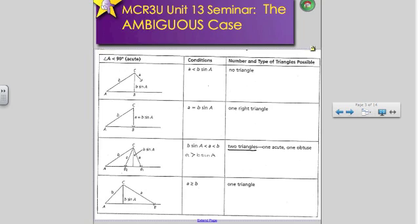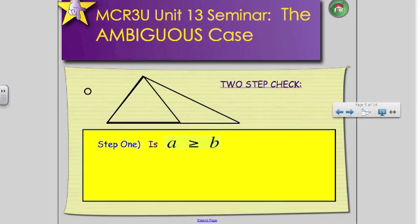First of all, a triangle cannot be, might not be possible. So, your very first step, you are given your side length A and your side length B. So, step one, I want you to write this down, is to check, is A greater than B? Question mark. Is A greater than B? This is the very first thing you have to do.